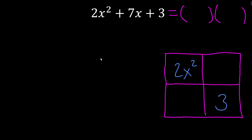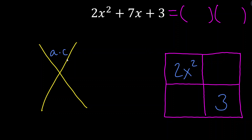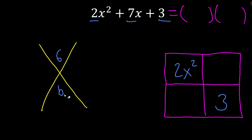Here's how it works. We draw an X, and all this X does is organize our work. We multiply a times c and put it up top, and we place b down at the bottom — this is exactly how the AC method works. So a times c: remember we have ax² + bx + c. For this example, a times c is 6, so I write 6 up top. And b is 7, so I write 7 at the bottom.